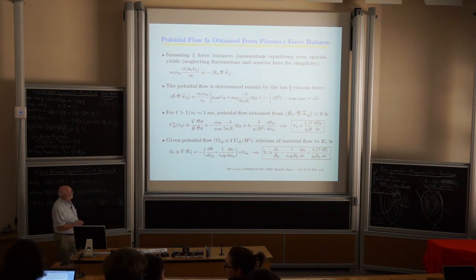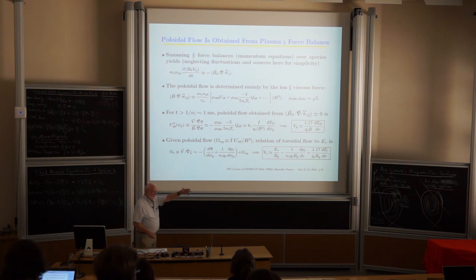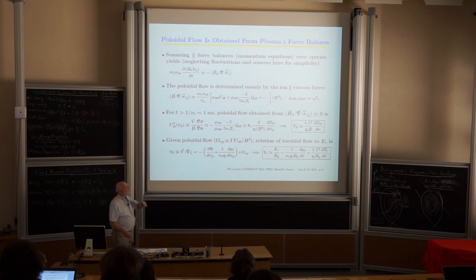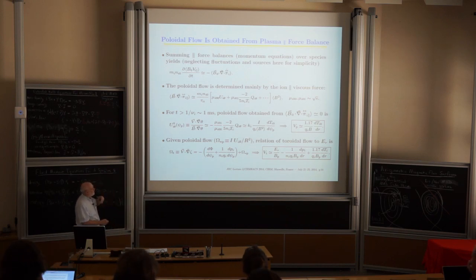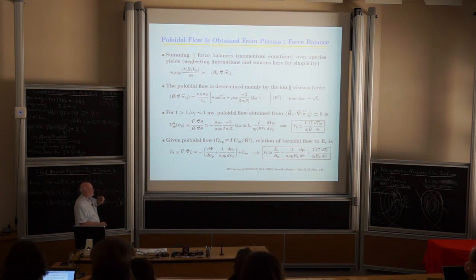Coming back to this: we already had force balance on the faster compressional Alfvén wave timescale. This neoclassical process specifies the poloidal flow as a diamagnetic poloidal flow, giving a relationship between the toroidal rotation speed and the radial electric field.